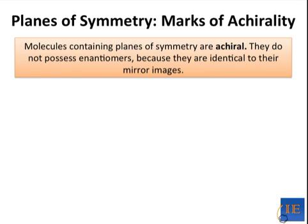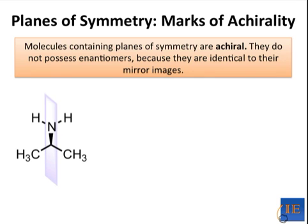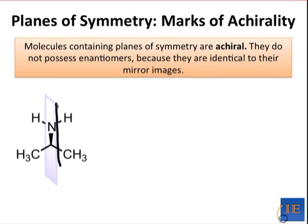A molecule that possesses a plane of symmetry is definitely achiral and identical to its mirror image. A plane of symmetry is a plane that we can place within a molecule such that all of the groups on the left-hand side of the plane are in the same position as the groups on the right-hand side, and if we reflected the molecule through that plane, we would generate a molecule that looks exactly the same as what we started with. In this amine, a plane that coincides with the C–N bond and bisects the molecule is a plane of symmetry.